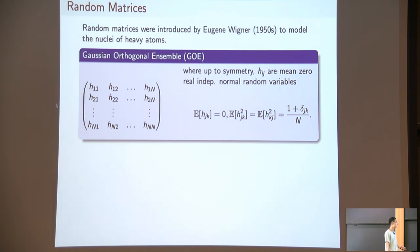At first thing, you may feel this variance structure is kind of strange, right? It turns out if you choose the variance structure in this way, then the law of the whole matrix is orthogonal invariant, which means if you conjugate the matrix by orthogonal matrix, the law does not change. That's why it's called the Gaussian Orthogonal Ensemble.